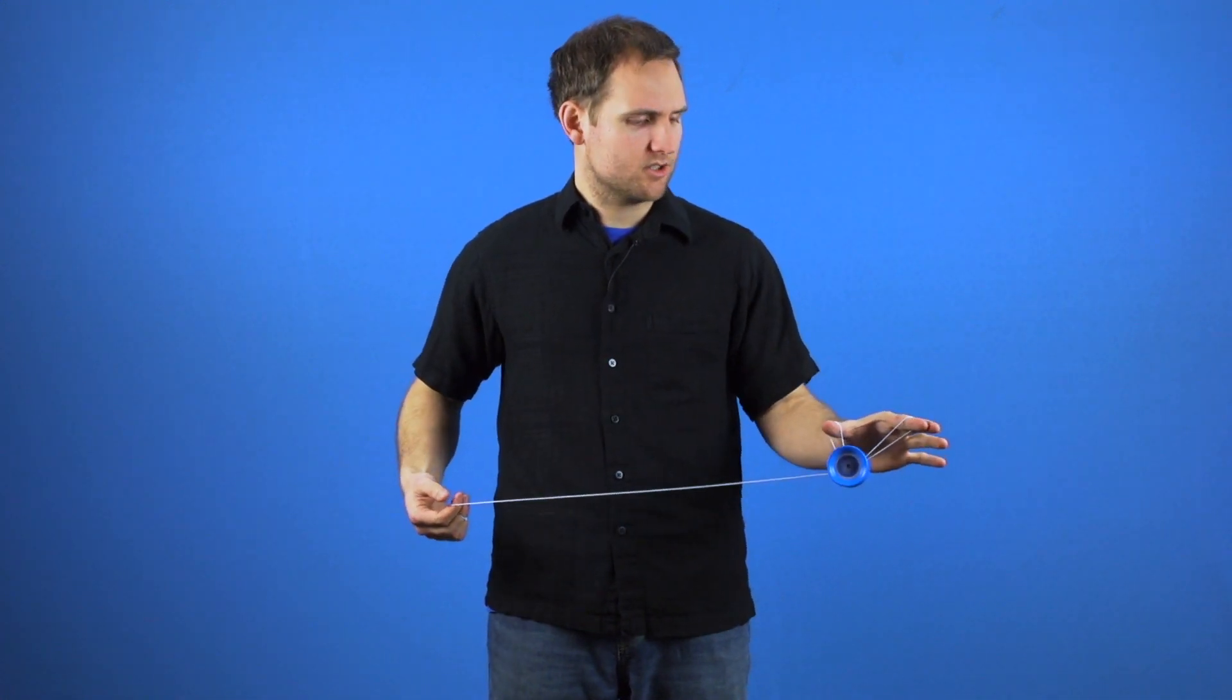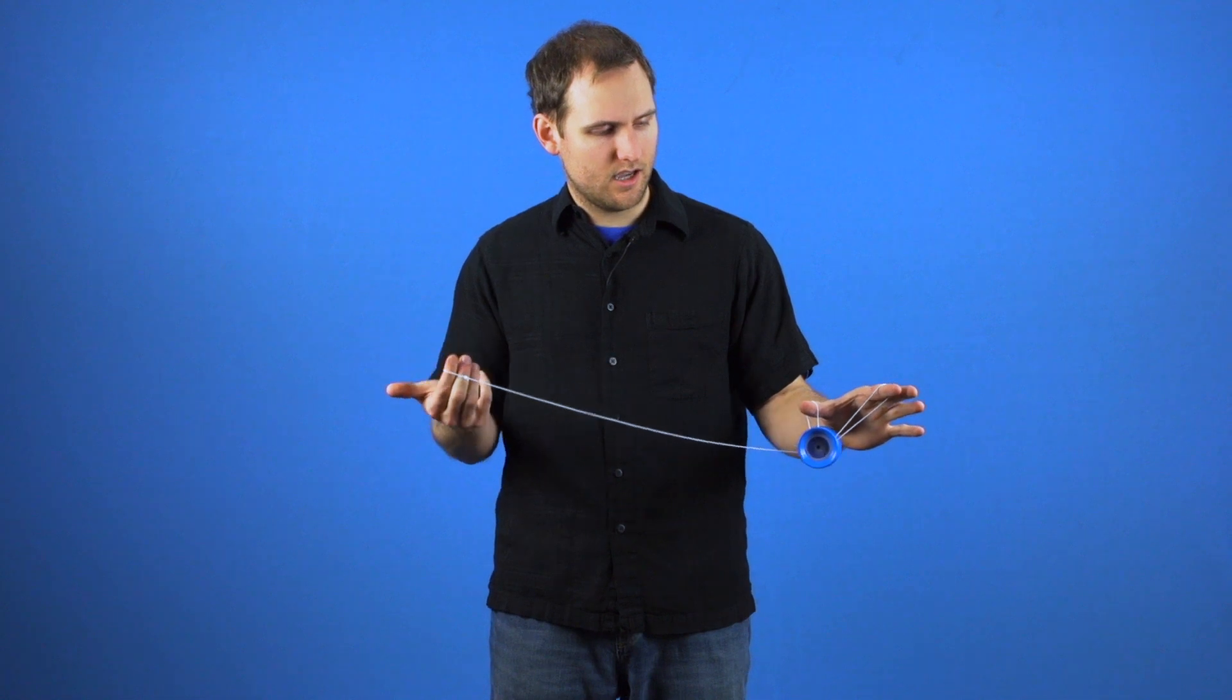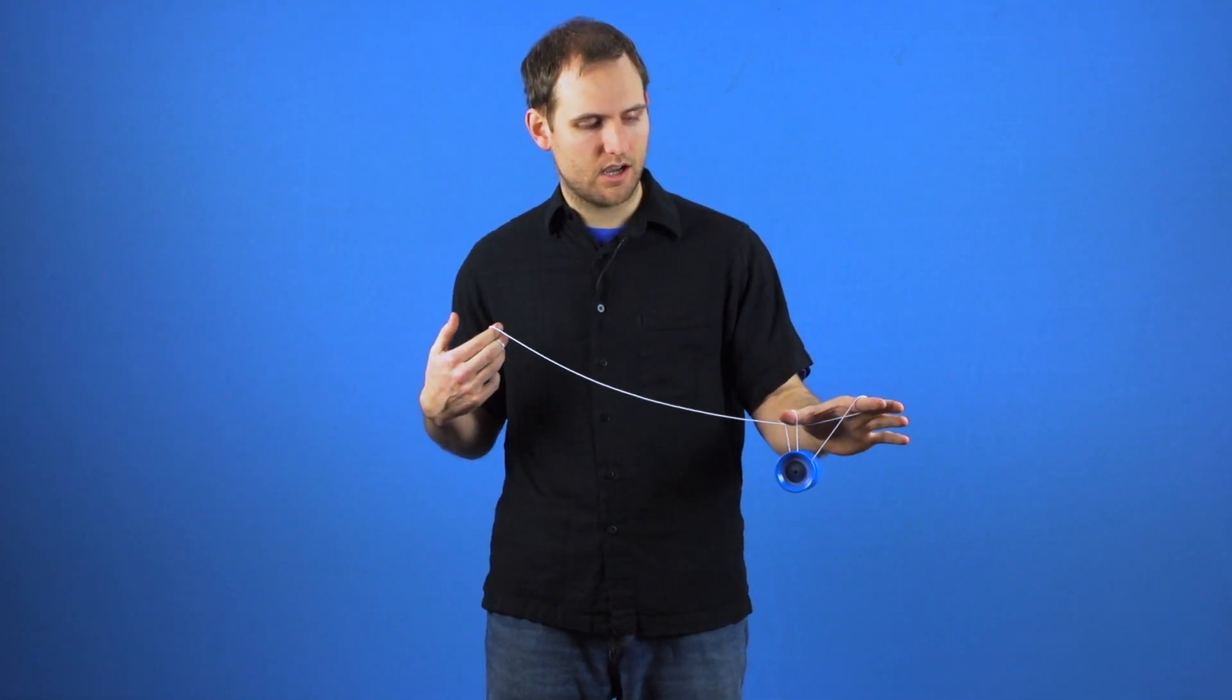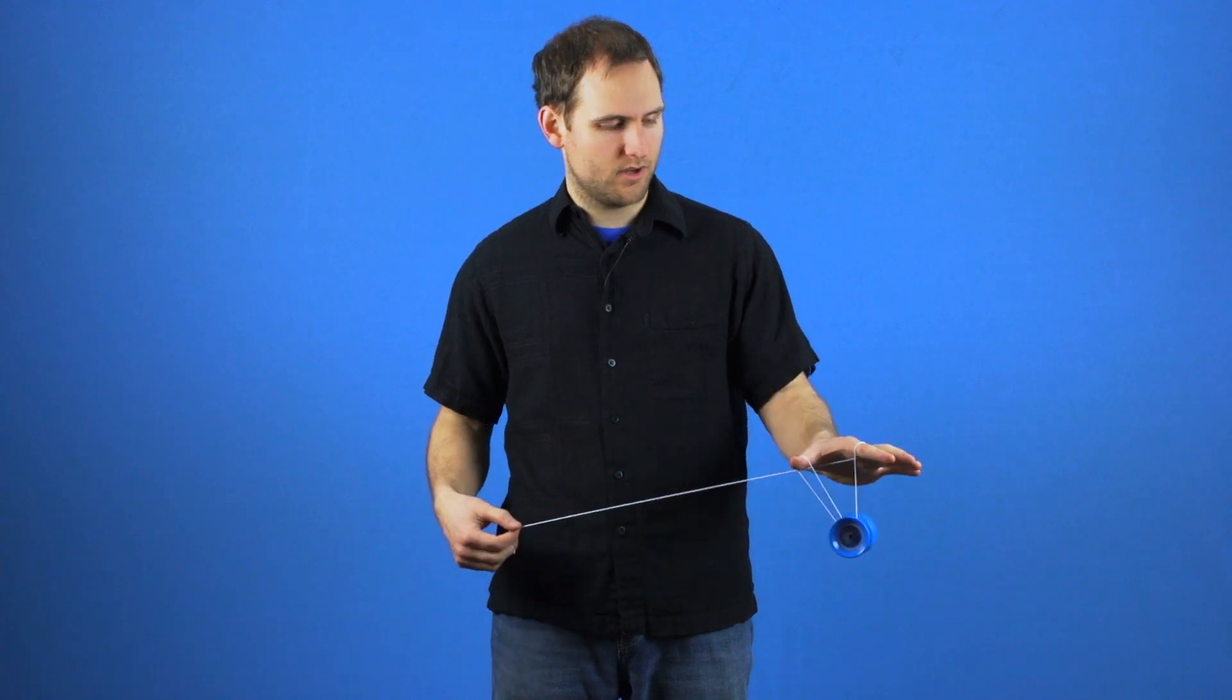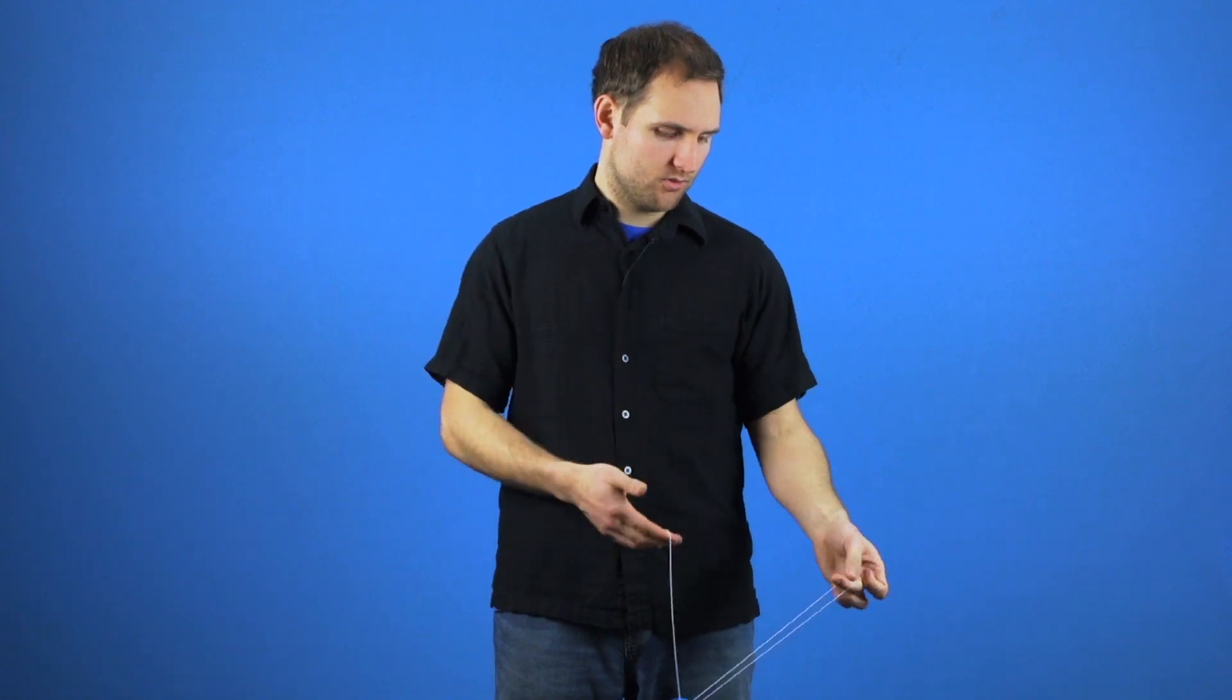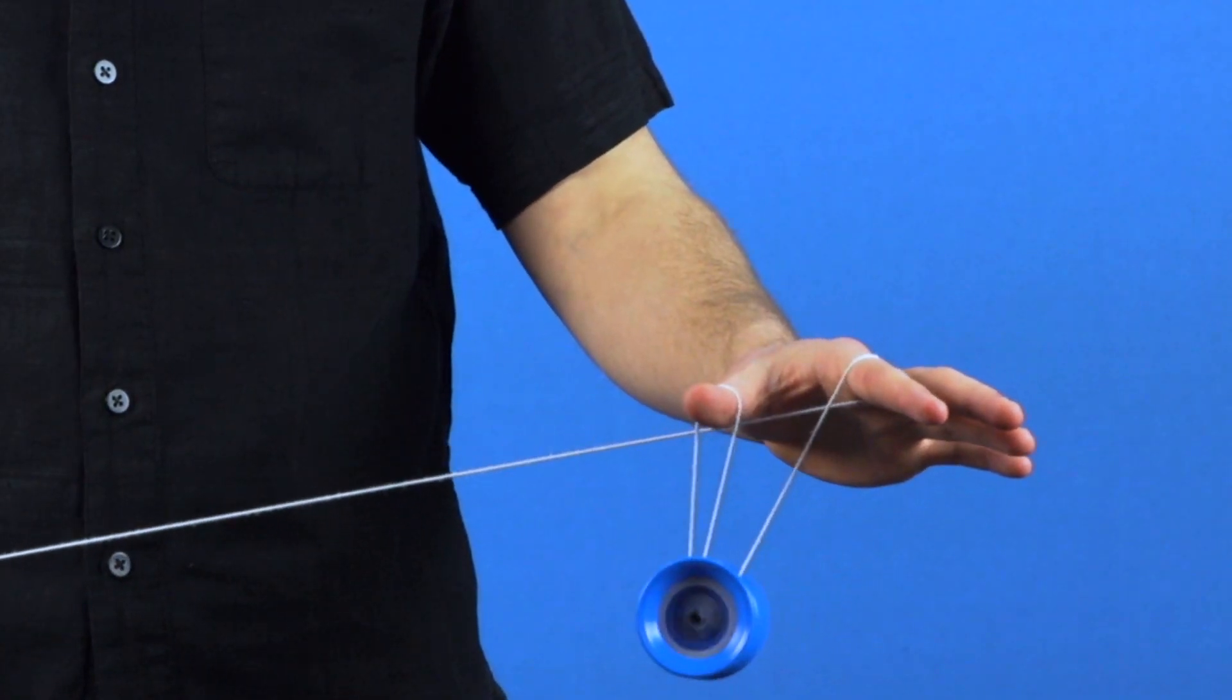The other thing to note about the basic chopstick mount is when you get into it you will notice you can land it either on the string like this or sometimes you might land it with the string out behind. Actually either way is fine and you can see that you can transition into either position. Both of those are the chopstick mount and you will find that different tricks begin from different positions either on the string or with the string behind the yoyo. So it is a good idea to get used to both.